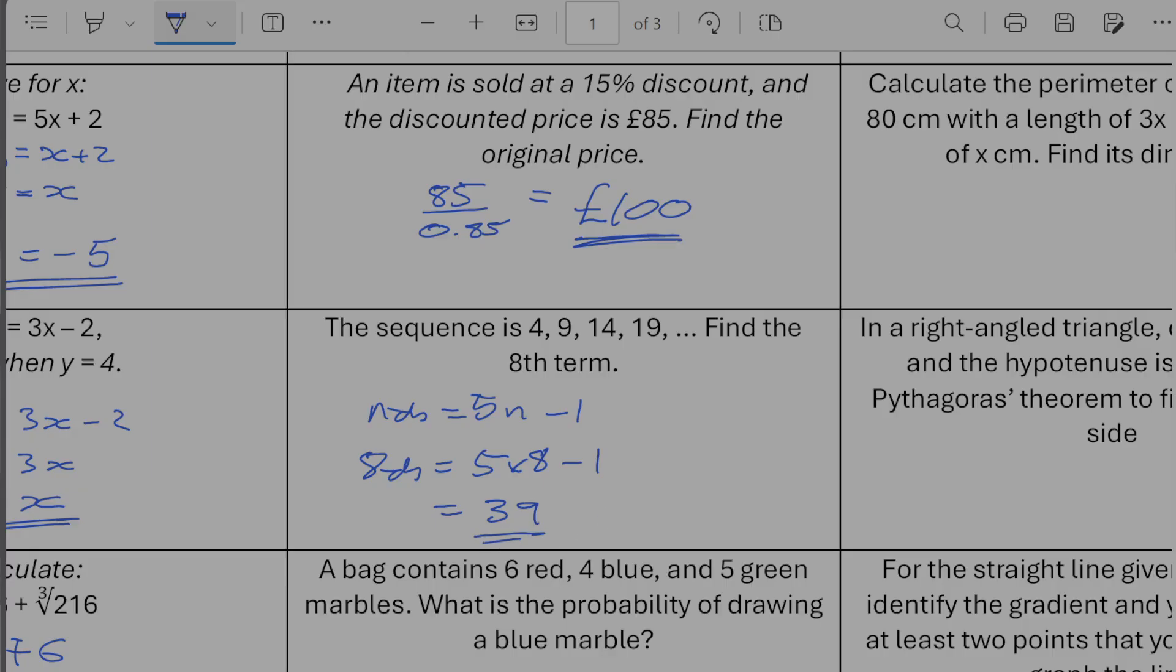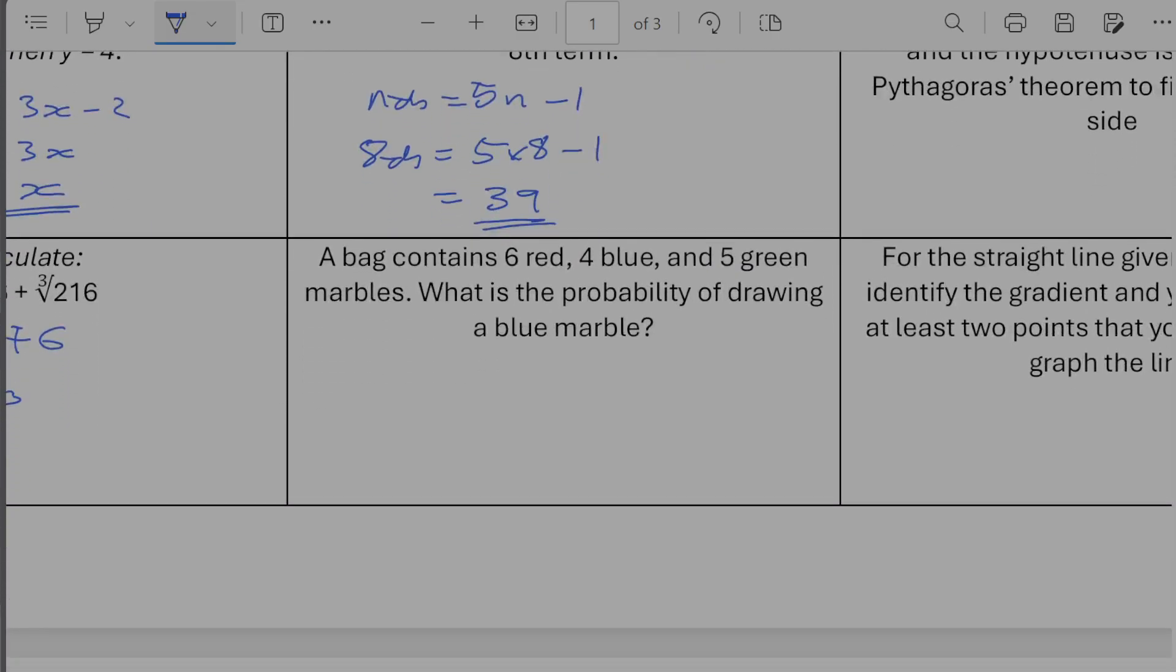A bag contains 6 red, 4 blues, 5 green. What is the probability of drawing a blue marble? So blue is this one here so that's going to be 4 out of the total number which is going to be 15. So 4 out of 15.